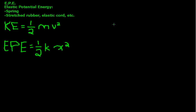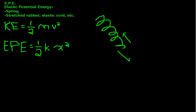What does this formula mean? Let's say we have a spring. X refers to how far you're pushing it in or pulling it out — you can either push a spring in or pull it out. If you're pulling it back one inch, that's negative X, and negative X squared equals positive X squared, same as pushing it forward one inch. So whether you're pushing or pulling on the spring, you're doing the same amount of work.